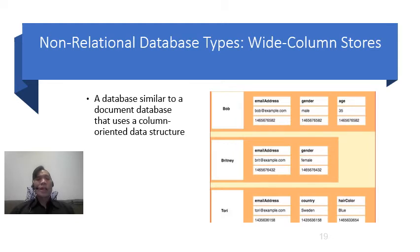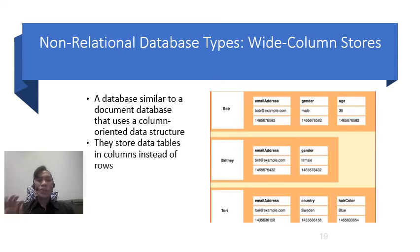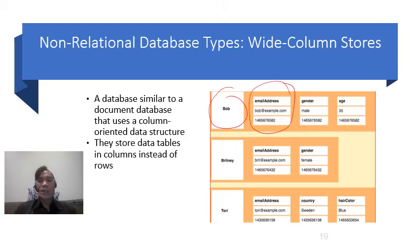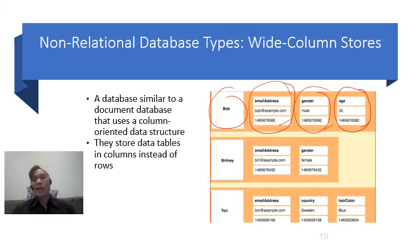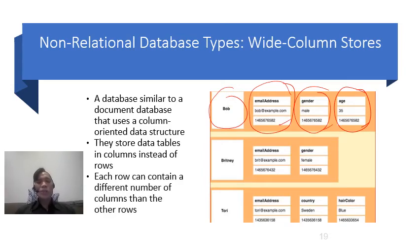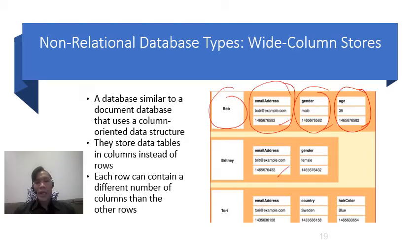Another type of non-relational database is what we call the wide column store. This is a database similar to a document database but it uses a column-oriented data structure rather than a document column data structure. It stores data in tables by columns instead of rows, which means if you want to look at information for a person like Bob, you look at the email address, gender, and age together, each with its own hashed value. Each row can contain a different number of columns than the other rows, and the hash values are uniquely identified within the sphere of the wide column store.